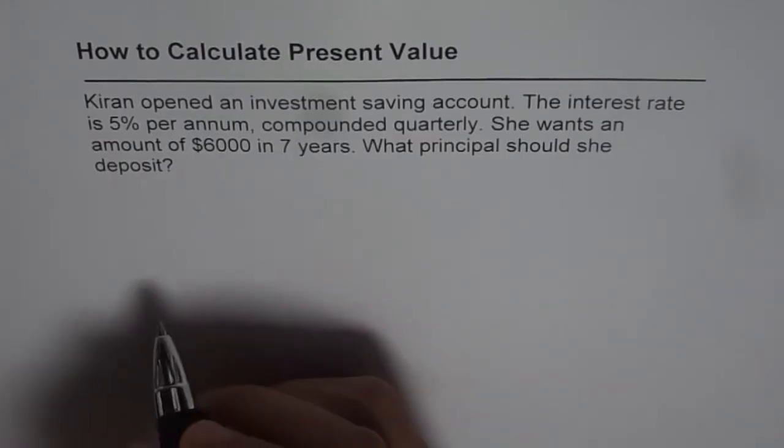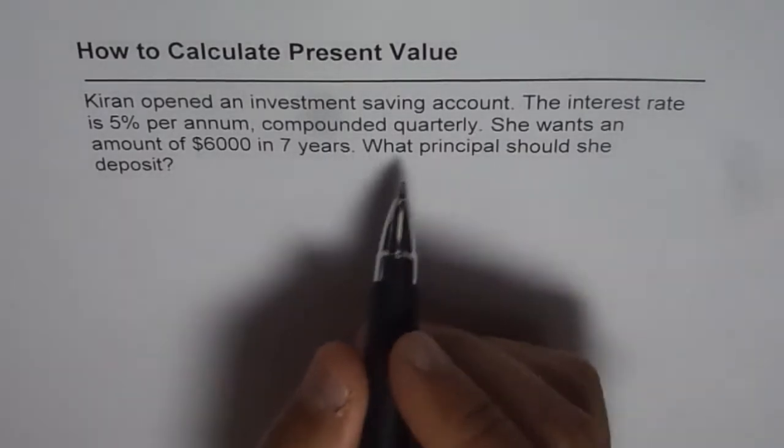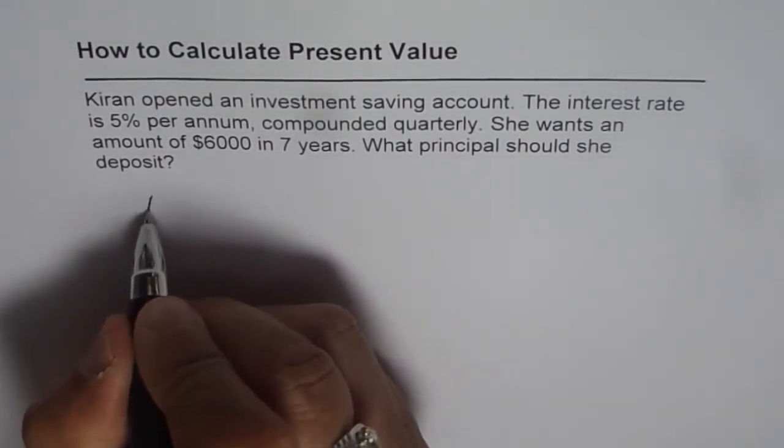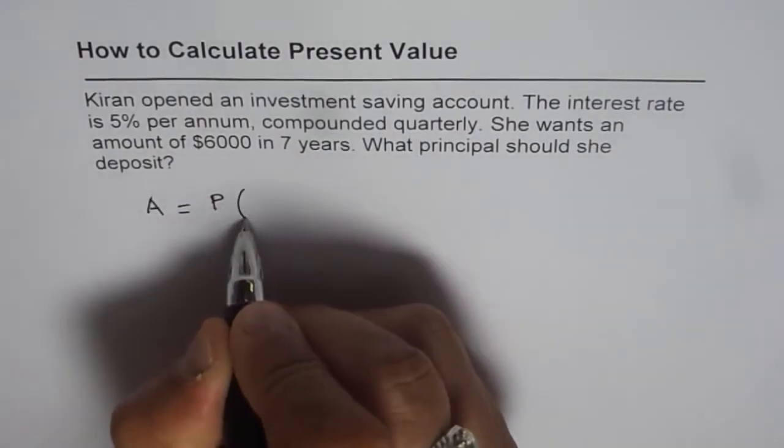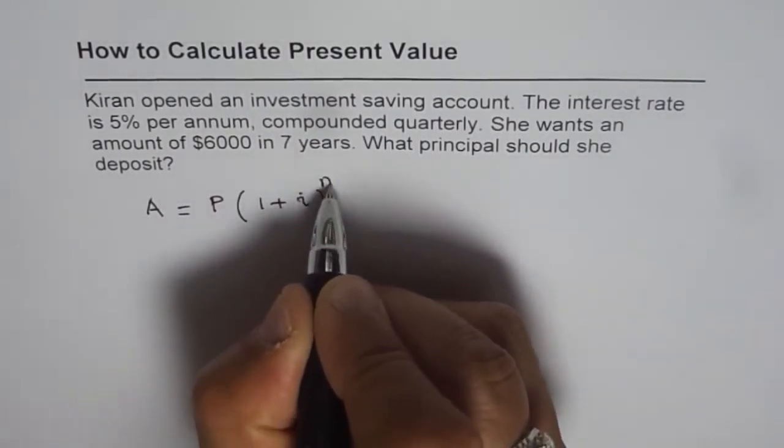So what we know here is that if we do compound interest problems, the future value, amount A, is equal to present amount P times (1 plus i) to the power of n.